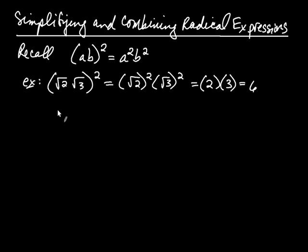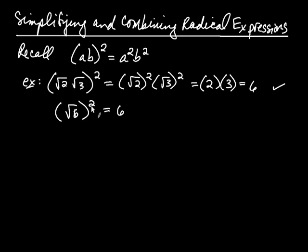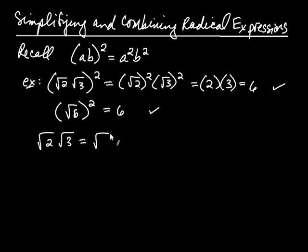On the other hand, notice that if you take the square root of 6 and you square it, the square root of 6 times the square root of 6 is just equal to 6. So on the first line, I took that and squared it and got 6. On the second line, I took something else and squared it and got 6. Because these are both positive and you squared each of them and got 6, these two quantities must be the same. The point is that the square root of 2 multiplied by the square root of 3 is equal to the square root of 6.